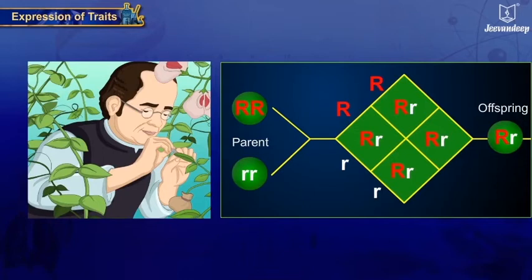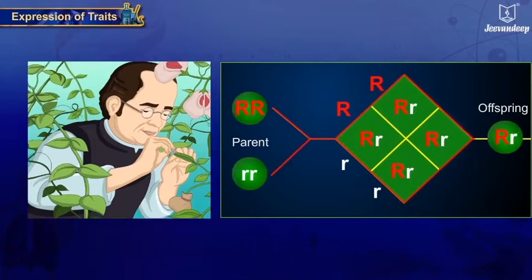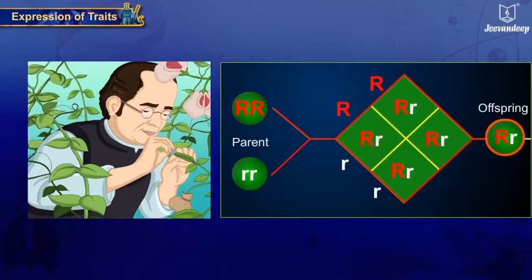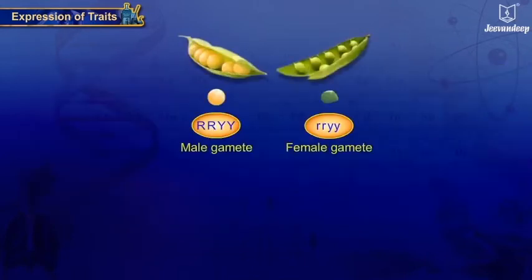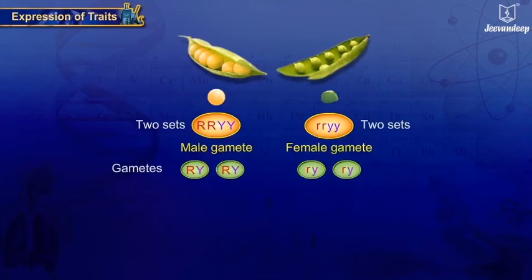Mendelian experiments show that each parent plant contributes equally to the DNA of the offspring. Both parents contribute a copy of the same gene. Thus, each pea plant has two sets of all genes, and each gamete has only one gene set.